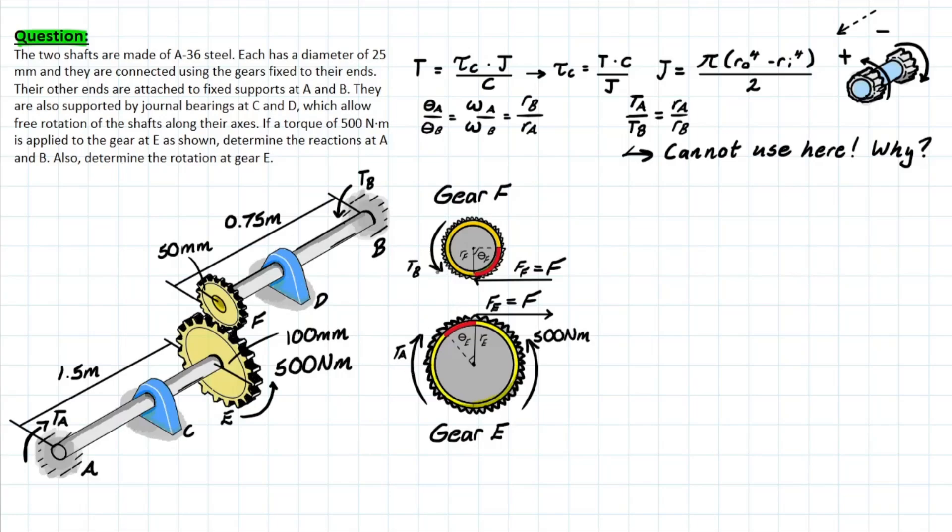So that's what's going on with TA and TB here. So this torque here and here are both going to be acting against this 500 N·m torque in order to bring the system to equilibrium.